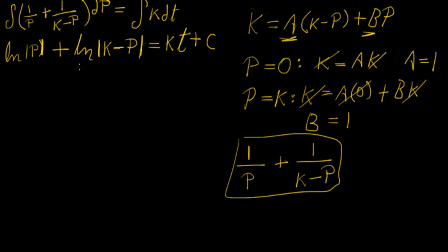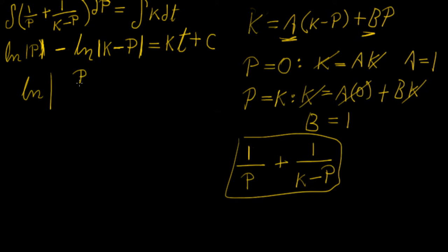We need to make sure this is balanced — I made a mistake because the second term should have a negative sign. The reason is that we're integrating k minus p in the denominator with a minus, so we need the numerator to be negative to balance the differentiation. Once corrected, it's better to group all the logarithms together. By the laws of logarithms, we can combine them into a single one: ln(p over k minus p) equals kt plus c.